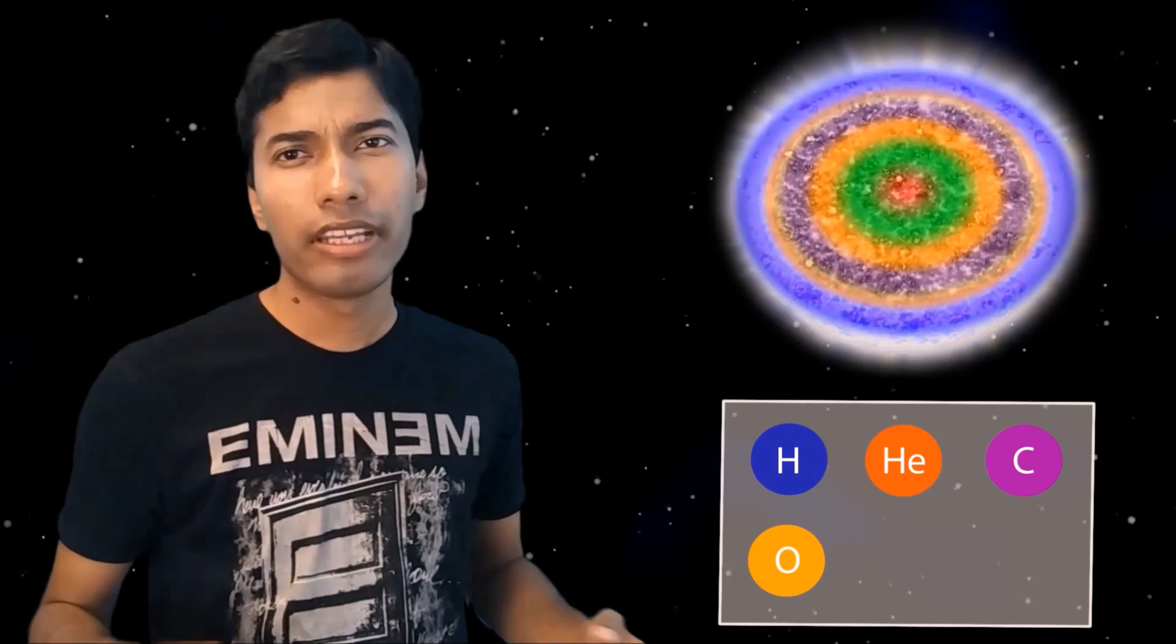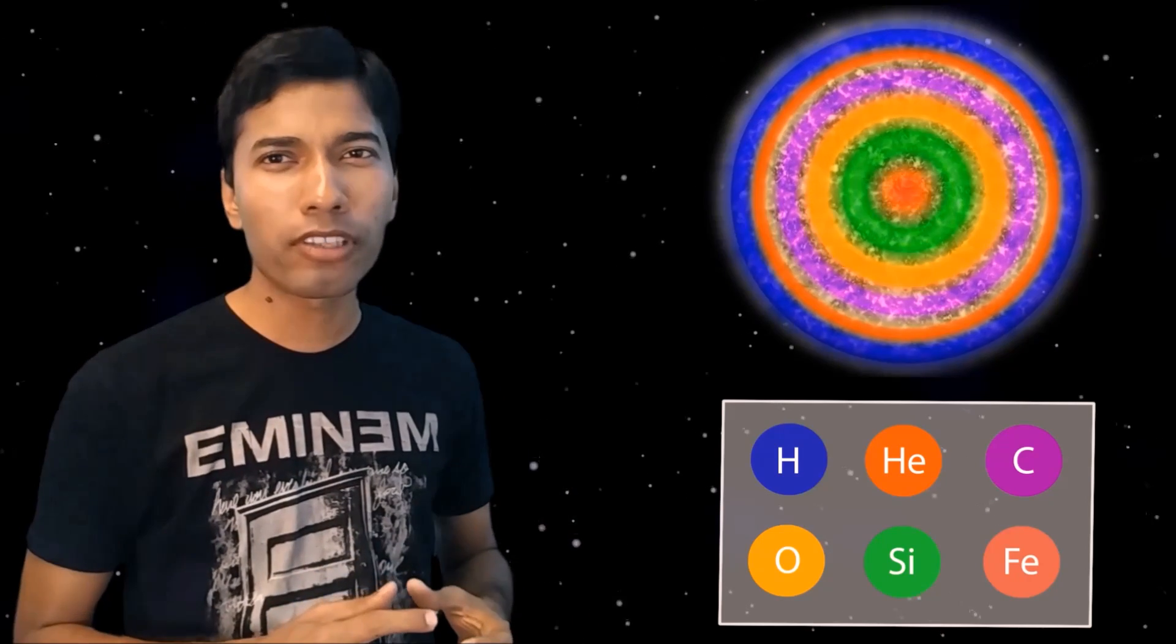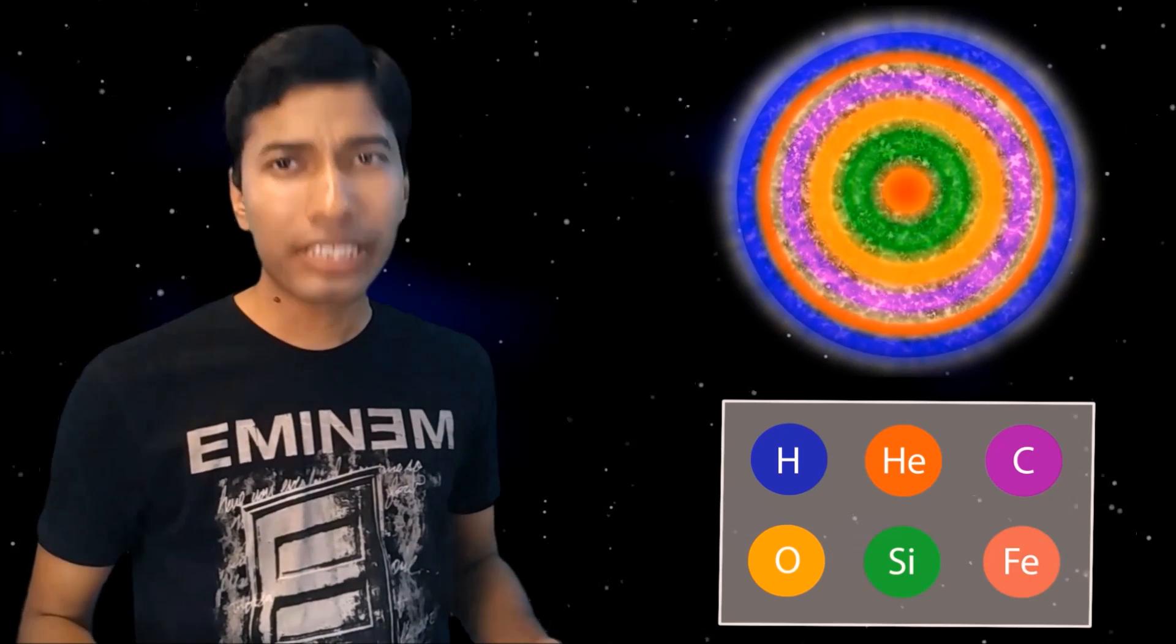Carbon fuses into neon, neon to oxygen, oxygen to silicon. Eventually the fusion process leads up to iron, which cannot be fused into another element. The fusion stops and the stellar evolution comes to an end.